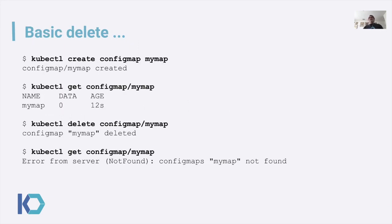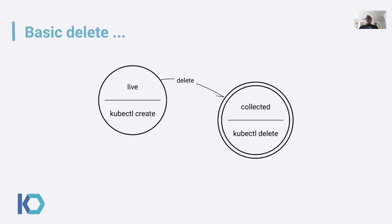Here's the basic delete. All of my shell commands are in bold; the output for those shell commands is the lines immediately following in unbolded letters. Here you can see I've got a kubectl create configmap my-map. This is going to create an empty config map. I can then get that config map to prove that it actually exists, I can then delete that config map, and then I can attempt to get it again. I get a 404 back on that last kubectl command, which means that it's not found. This is the basic delete — very simple. We start off with a kubectl create, which creates a live object. I then perform a kubectl delete, which deletes the object, and it's basically the final state for the state diagram.